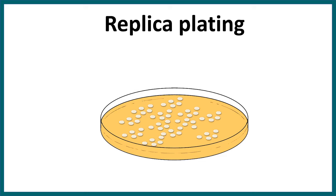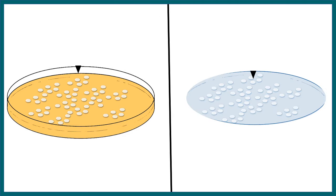First, we have to do replica plating — that means we need two plates with the exact same architecture of colonies. After replica plating, we place a nitrocellulose membrane onto the plate, and some imprint of these colonies is transferred onto the membrane. Note that there is a marker which helps you understand the orientation in which you have traced the colonies from the plate.